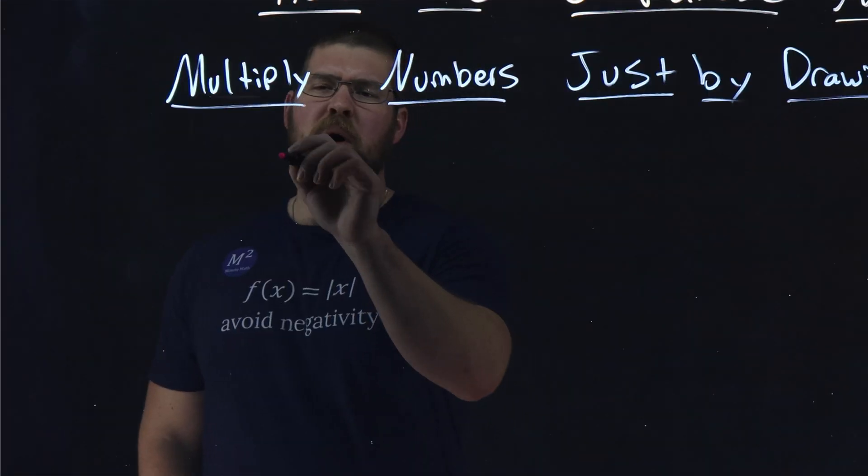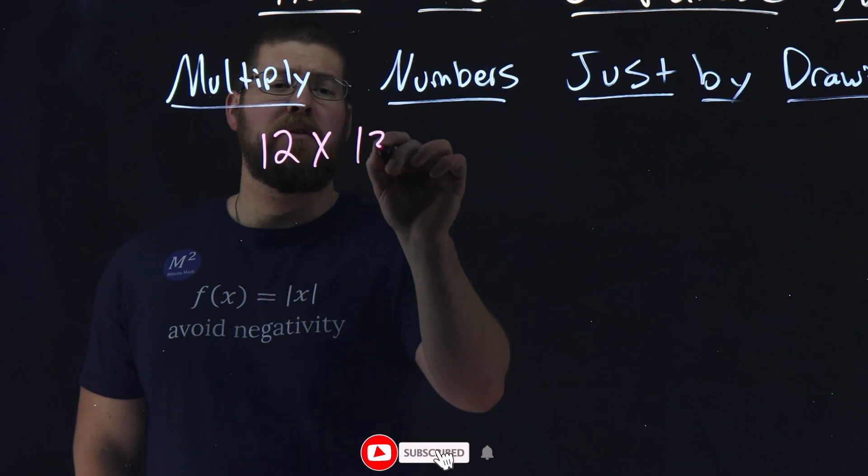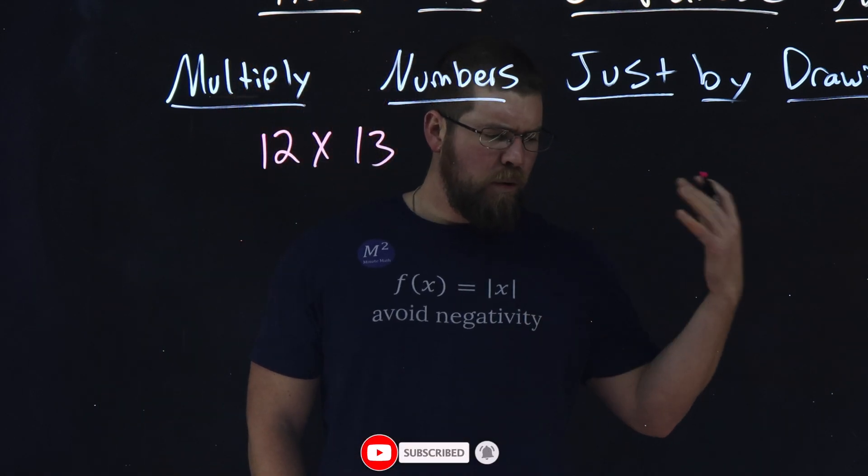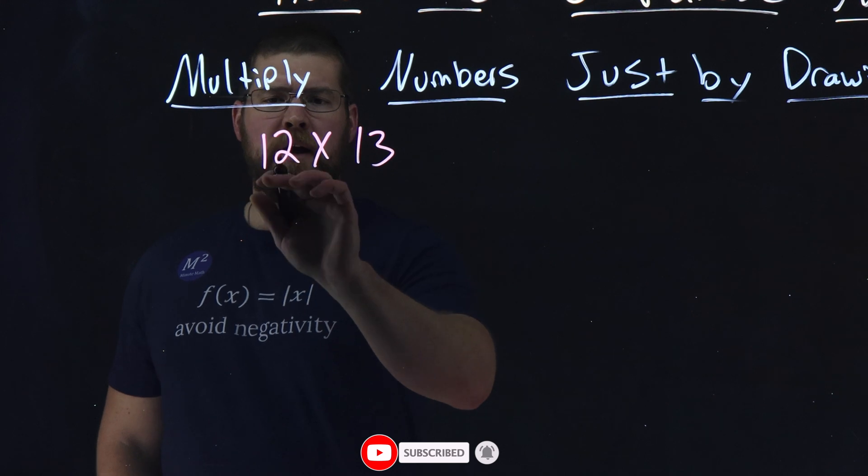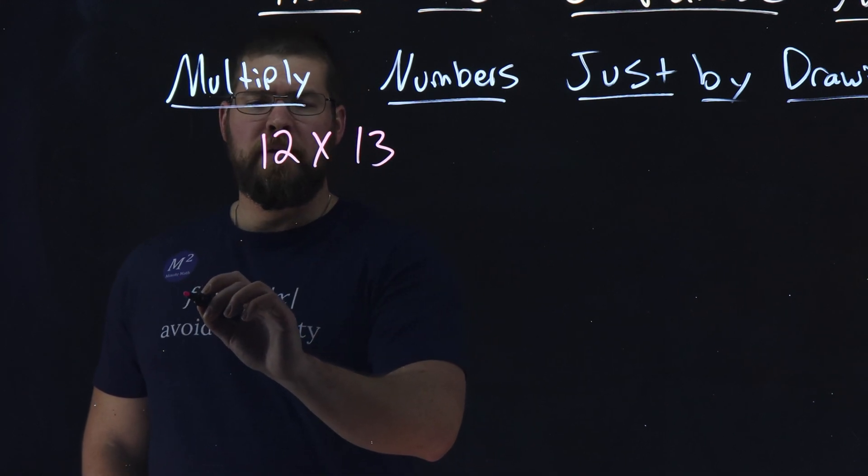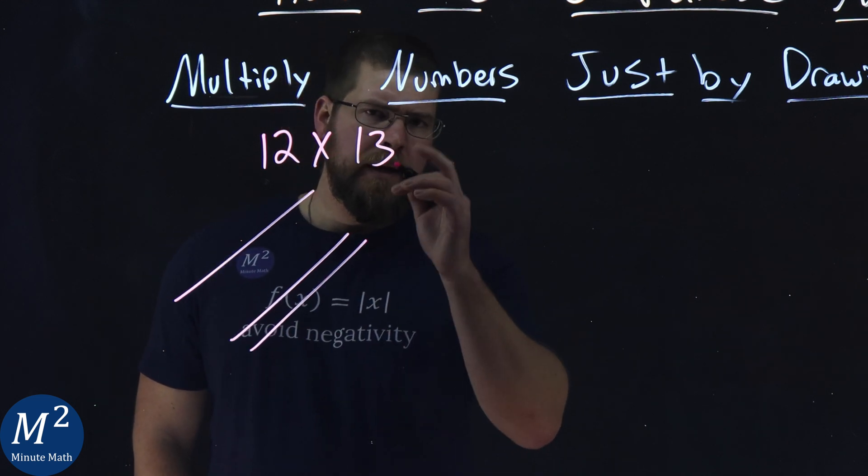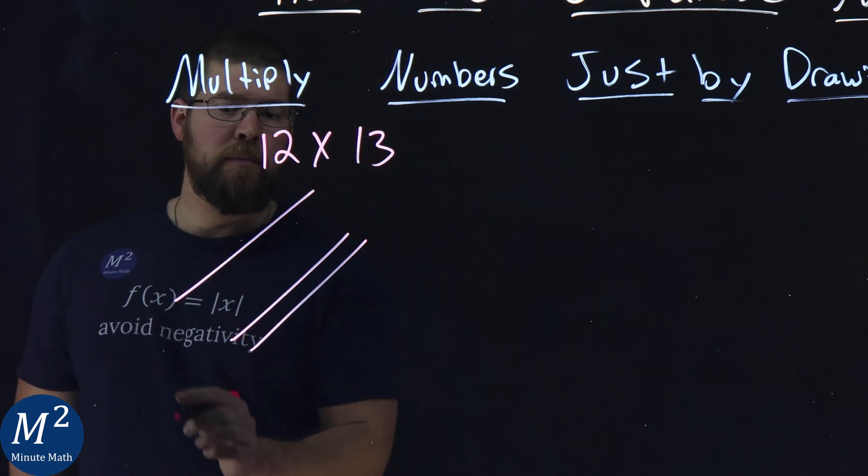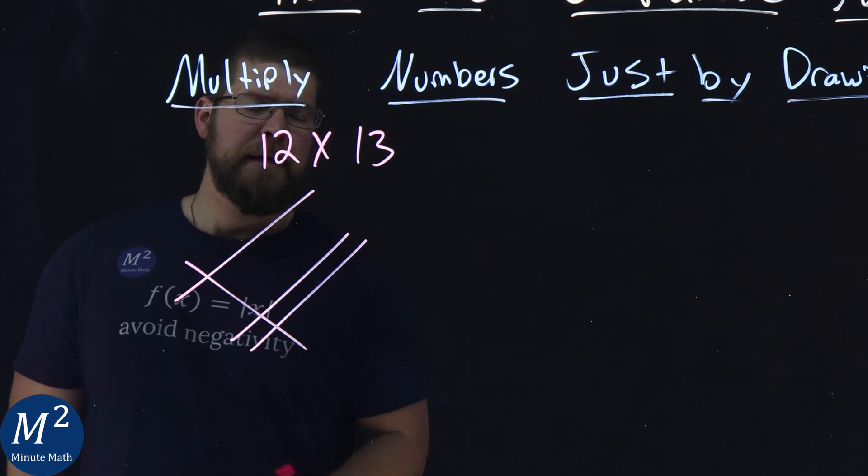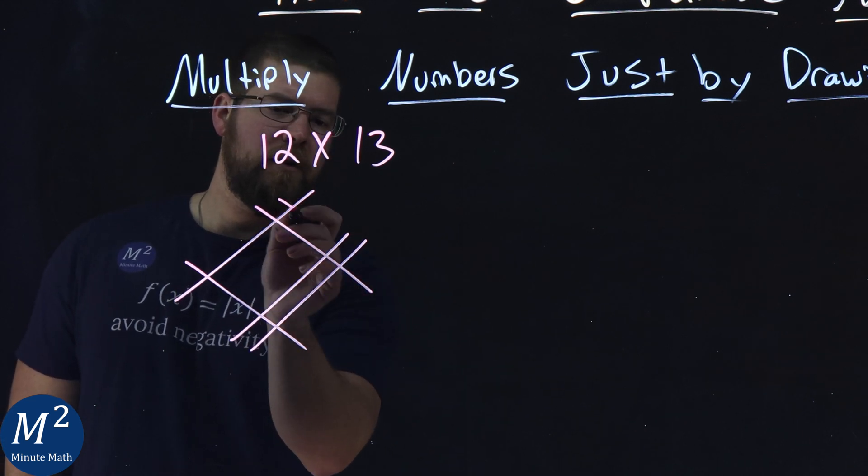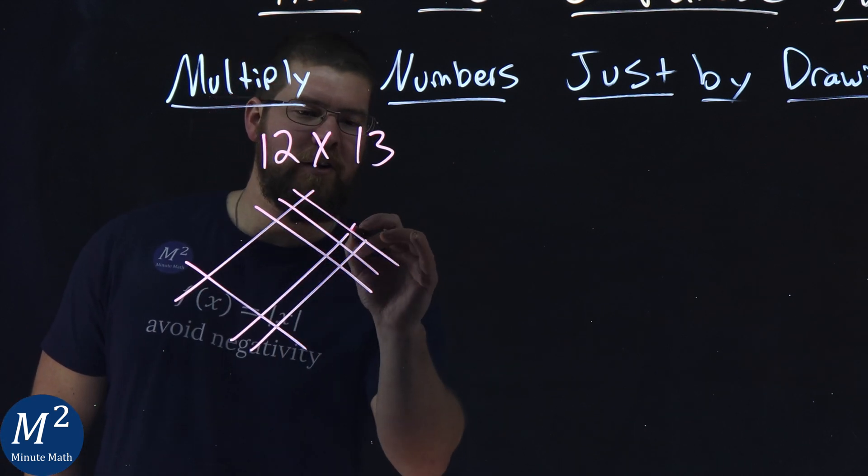So, if I want to multiply 12 times 13, how would I do that? Well, using this number trick, we would make one line, start with the 12, one line this way. Give it a space, and put two lines here. Then, the 13, start at the bottom left, make one line here, and then make three lines over here. One, two, three, and make sure they all intersect here.